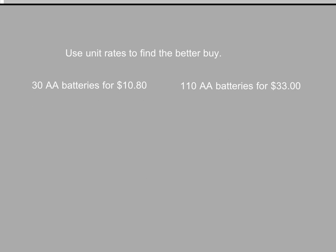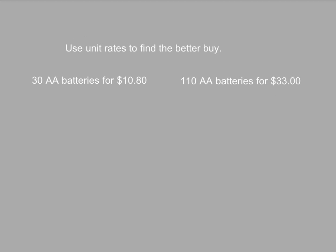We can also use unit rates to help us find a better buy. So if I have a choice between different sets of batteries — 30 AA batteries for $10.80 and 110 AA batteries for $33 — I want to know which is the better buy. I always find it easier to put the dollar amount on top and the other amount on the bottom, so I'm figuring out how much it is for one battery.